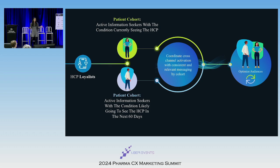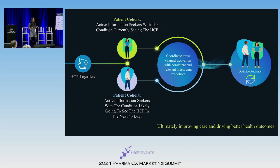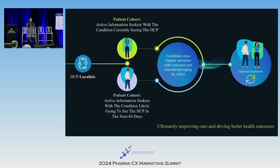We talk a lot about omni-channel, so we can take it a step further. We can actually look at the cohort's patient population to unify DTC and HCP messaging. Here we have an HCP loyalist cohort. We segment the HCP loyalist cohort's patient population into two key audiences based on where they are on their health journey: those who are currently seeing an HCP, and those likely to see an HCP in the next 60 days. This forward-thinking approach, along with unified targeting and consistent messaging across all channels, really leads to better health outcomes. This is really why the data from HCP Pro is a critical element to both the planning of a campaign and its optimization.